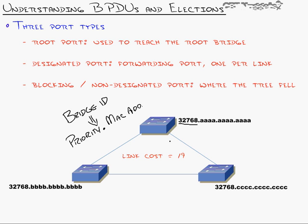The priority is counterintuitive — lower is better. The lower your priority, the more chance you have to be elected root bridge. Since all priorities are tied when switches come out of the box, Spanning Tree resorts to the MAC address to break the tie. Manufacturers start with the lowest MAC addresses in their range, so older switches have lower MAC addresses. That's why the oldest switch in the network becomes the root bridge by default.